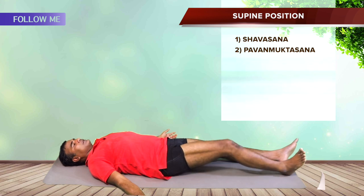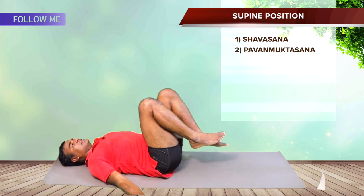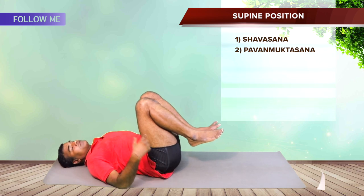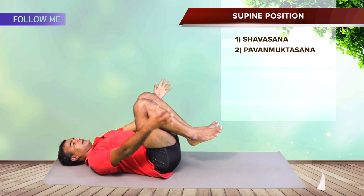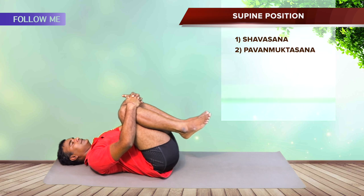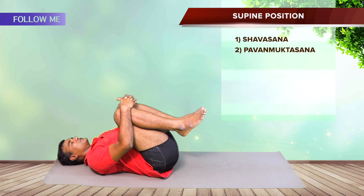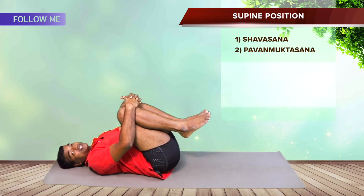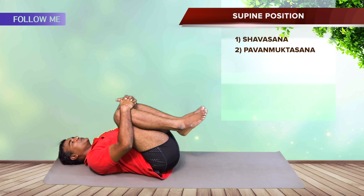Now let's do both legs together. You can repeat Ardha Pavan Muktasana two or three times. Bend the right knee to the chest, then the left knee to the chest, and hold the position. Let the abdomen be active, check that neck and shoulders are relaxed, chin tuck. Inhale, interlace the fingers, then exhale and gently take the knees towards the chest — very slowly, very relaxed, no force. Let it be gentle enough that the muscles give way for the stretch without you having to push or force. Enjoy your breathing.